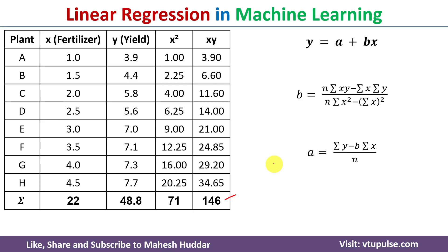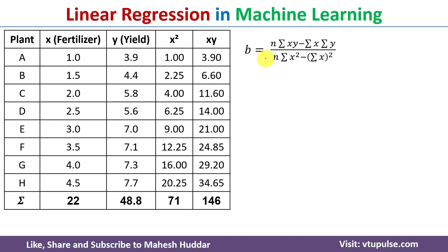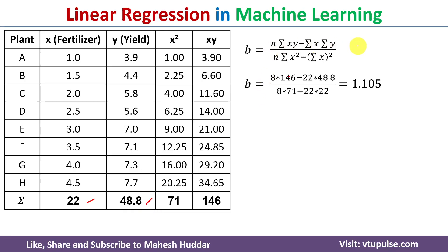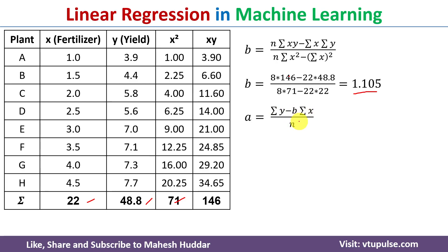Once we have all the required values, we substitute them into the b equation. So b equals n (which is 8) times summation of xy (146), minus summation of x (22) times summation of y (48.8), divided by n (8) times summation of x squared (71), minus summation of x bracket squared, which is 22 squared (22 × 22). After simplification, we get b equal to 1.105.